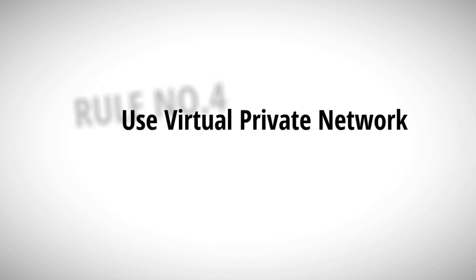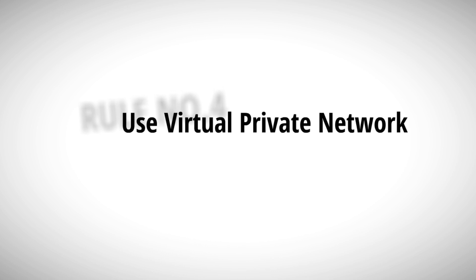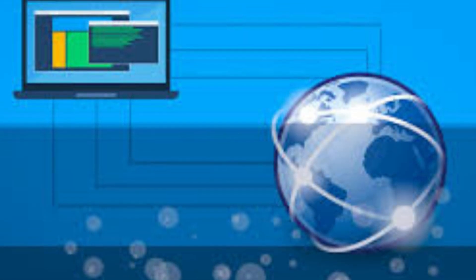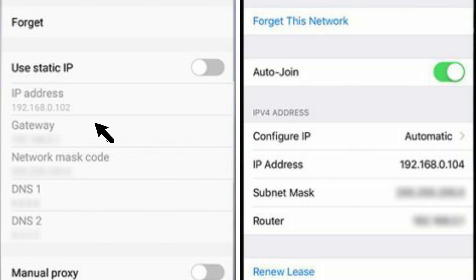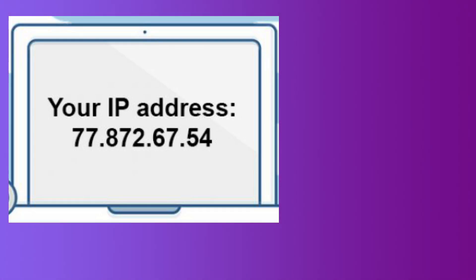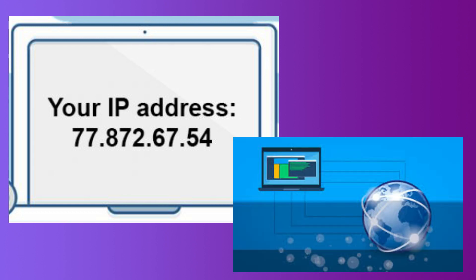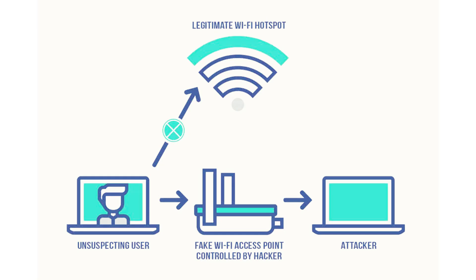Number 4: VPN. When you use the internet, your device connects using an IP address — Internet Protocol address. Every device is assigned an IP address to connect and communicate on the web. That is why we use a VPN.